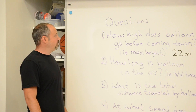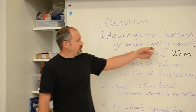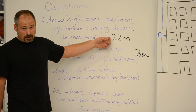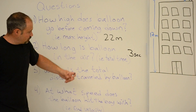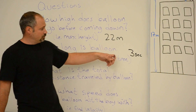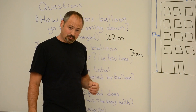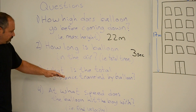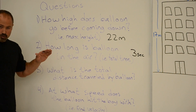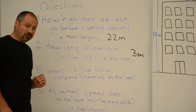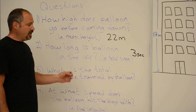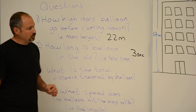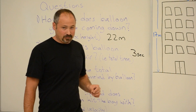In part 1, we found the maximum height the balloon went, which is 22 meters, and the total time the balloon is in the air, which is 3 seconds. In this part, part 2, we're going to find what is the total distance traveled by the balloon, and at what speed does the balloon smack the boyfriend.